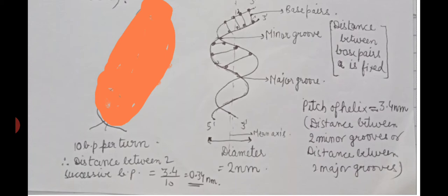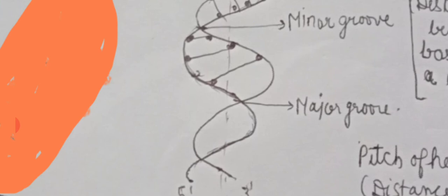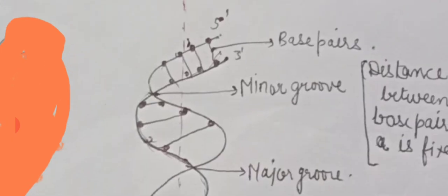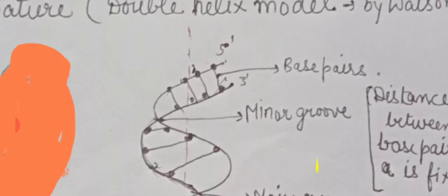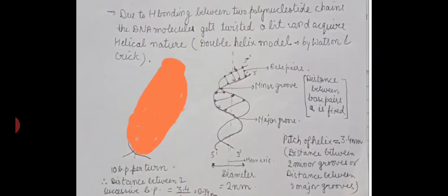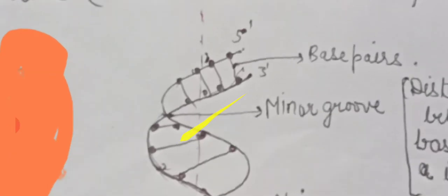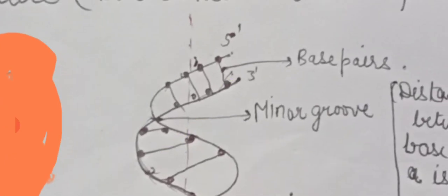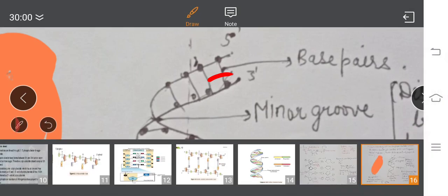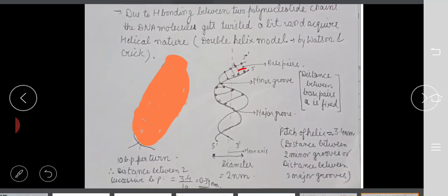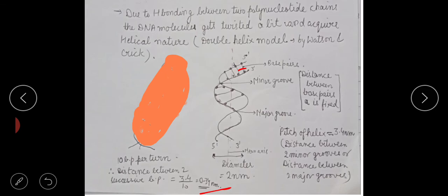Since each turn is 3.4 nanometers and contains 10 base pairs, the distance between two consecutive base pairs is 3.4 divided by 10, which equals 0.34 nanometers. The total diameter of the B-DNA helix is 2 nanometers. These are important data values you must remember.